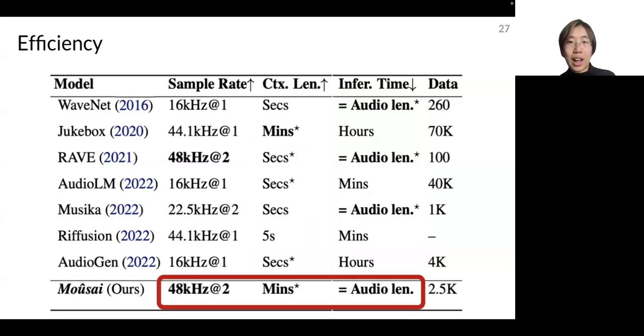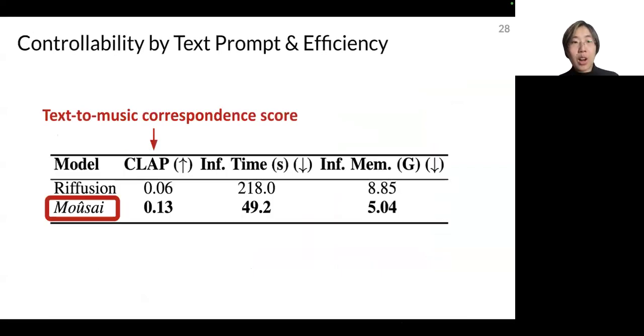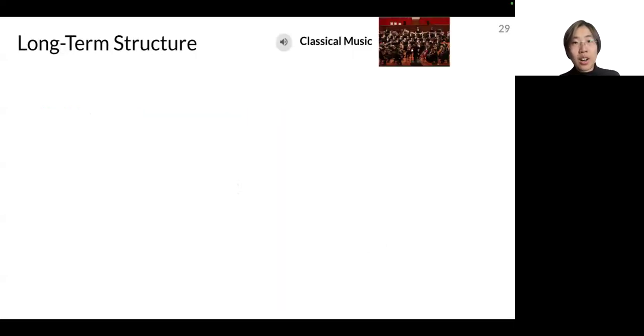Moreover, not only do we have these advantages, we can also keep up to a sample rate of 48 kHz. Apart from efficiency we also look into different properties of the generated music. One property here is how the music corresponds to the text prompt. So according to the CLAP correspondence score our model performs obviously better than the previous model Riffusion which we can also calculate a CLAP score of.